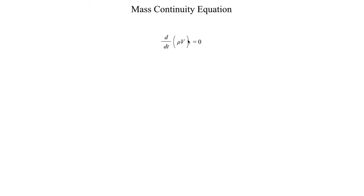Hopefully you remember from your calculus classes — here we can invoke something called the product rule. We can state that the left-hand side is equal to the first quantity times the derivative of the second quantity plus the second quantity times the derivative of the first quantity. Invoking that product rule, we get: ρ dV/dt + V dρ/dt = 0.